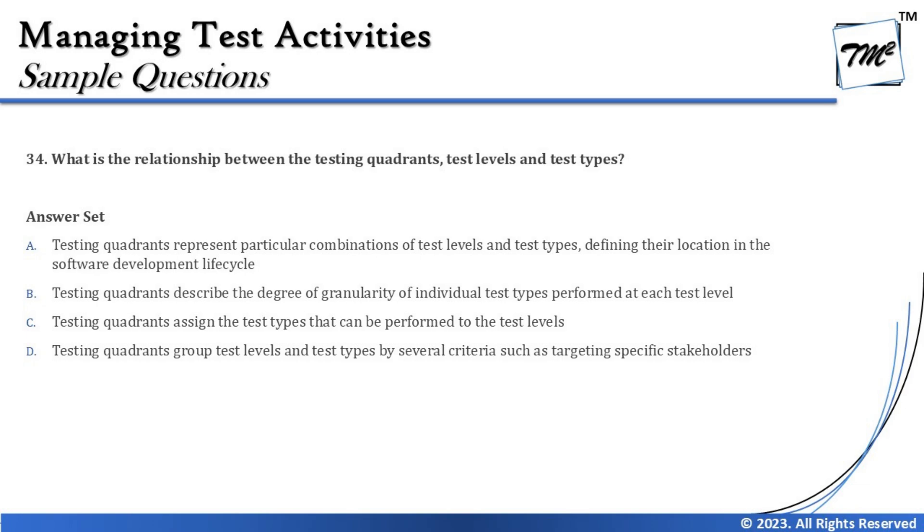Option B says testing quadrants describe the degree of granularity of individual test types performed at each test level. We just covered granularity in the previous question — the test pyramid is the context that talks about granularity, whereas the quadrant talks about grouping with a particular objective of test levels along with their amount of automation or manual effort.